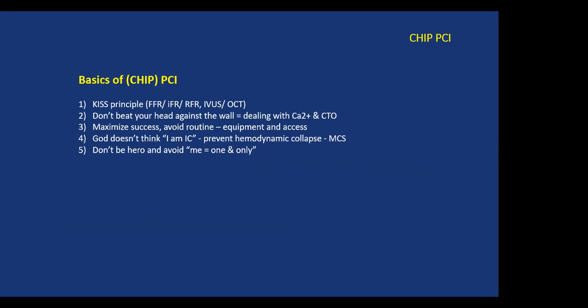After everyone sits together and determines that PCI is the best option, we get the so-called CHIP PCI, which has about five basic principles. The first is the KISS principle — keep it simple — trying to simplify procedures as much as we can using IFR, FFR, iFR, and CT as discussed a few weeks back.